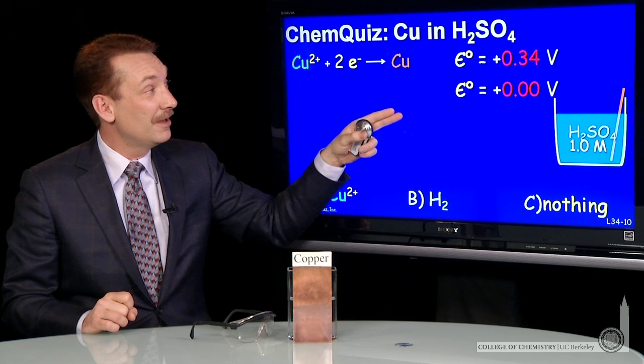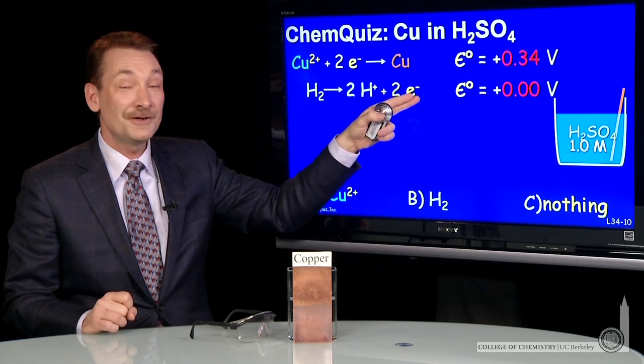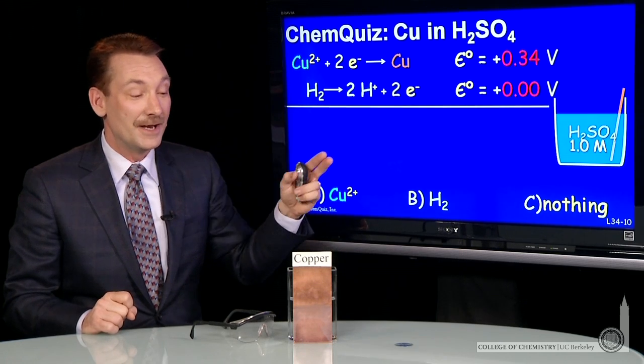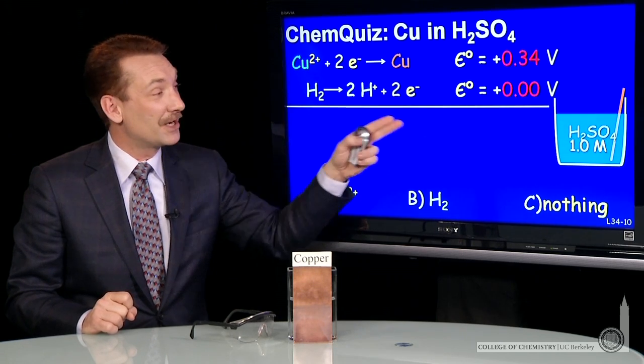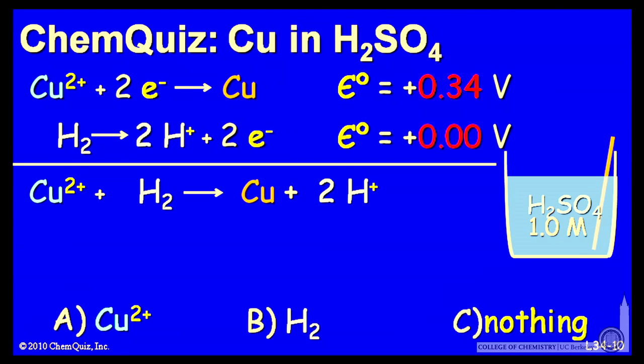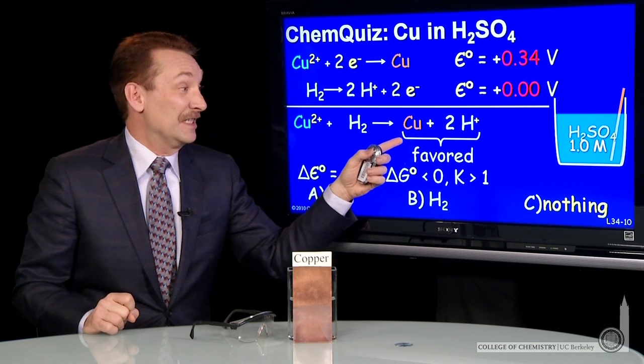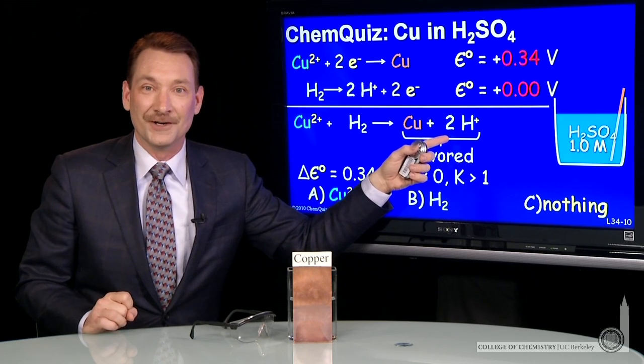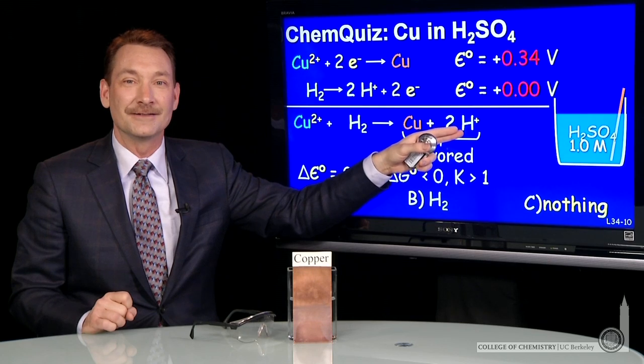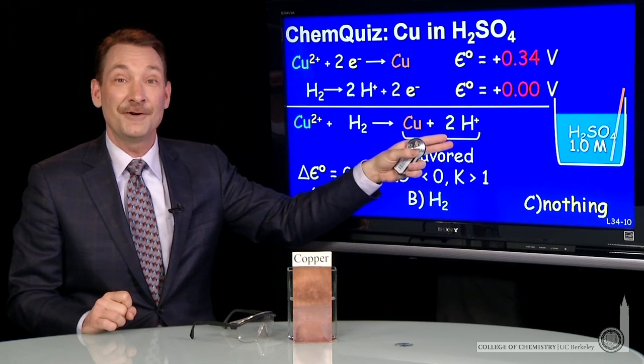The overall reaction, when copper metal is brought in contact with hydrogen ions, can be written like this. Copper ions and hydrogen gas naturally form copper metal and hydrogen ions. So essentially, we're already at the favored state. We're at the product state already, copper metal and hydrogen ions. So this reaction will not proceed any further.